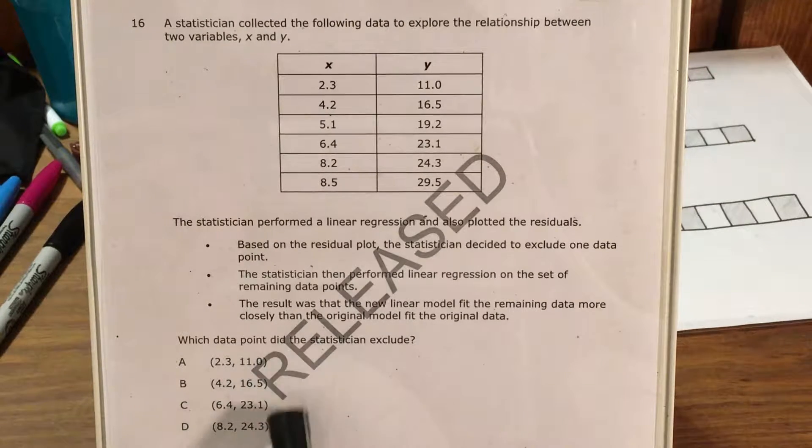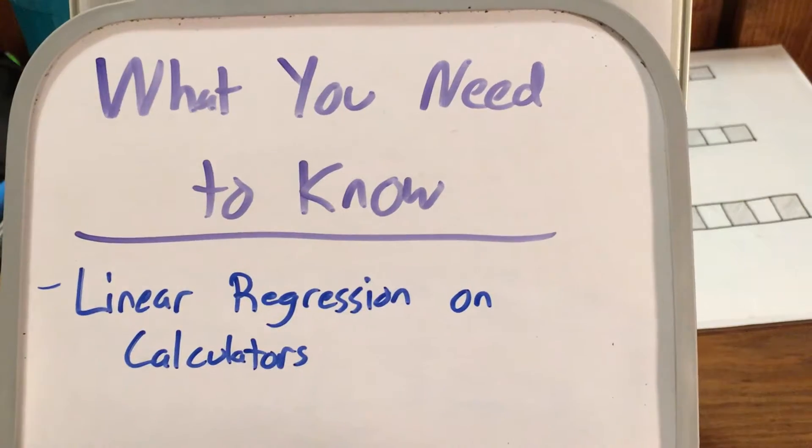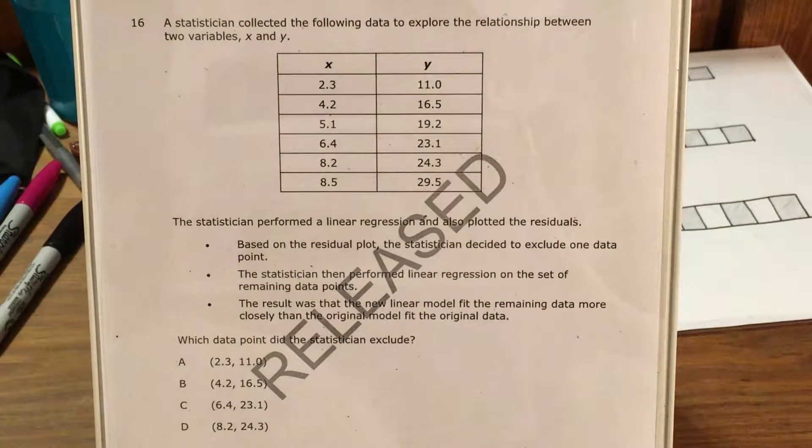And we're trying to figure out what data point the statistician excluded, took out. Now the big question or the big skill that this is testing you on is linear regression and I'm going to use this as an opportunity to go over how to do one of these on your TI calculator.